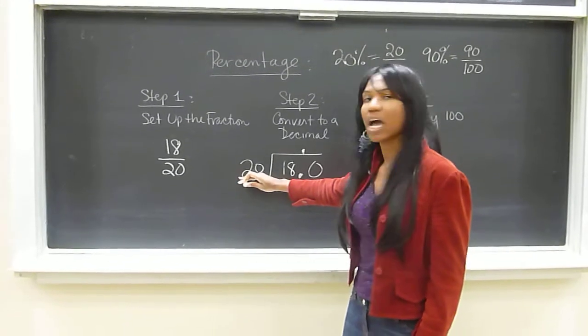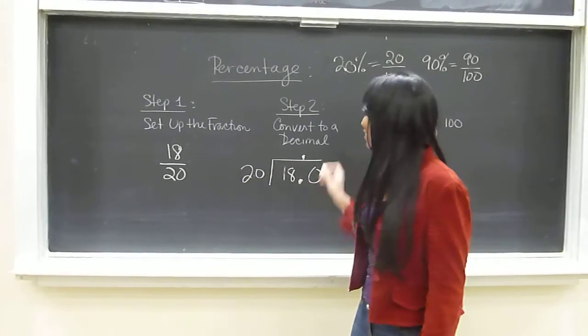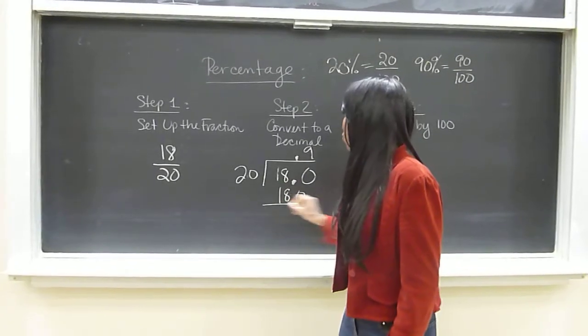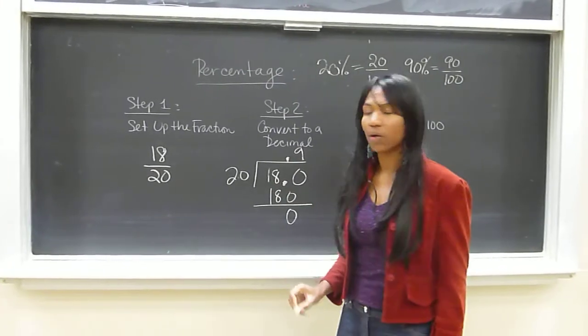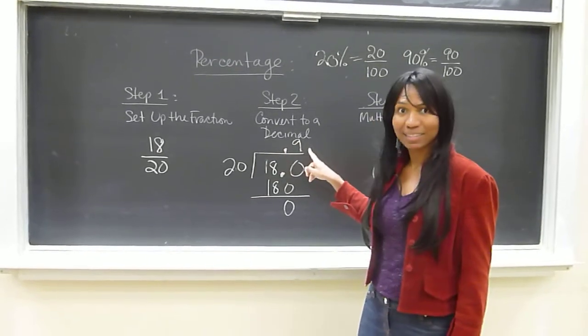Now we look at how many times does 20 go into 180? The answer is 9. We then subtract 180 and we're left with zero. So our decimal now is 0.9.